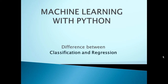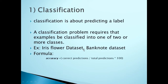In the classification problem, what we are calculating is the actual label. We are calculating the accuracy, the classification table, and the confusion matrix. Classification is about predicting the label, and the classification table requires that an example be classified into one of two or more classes.